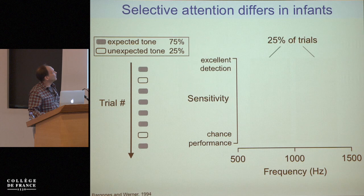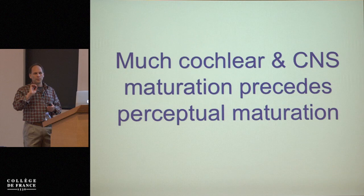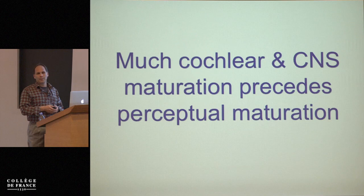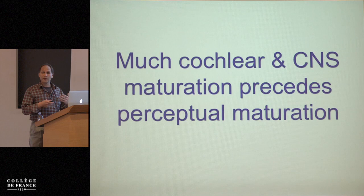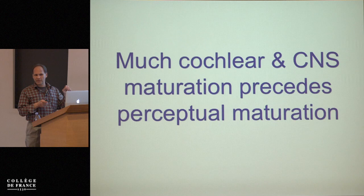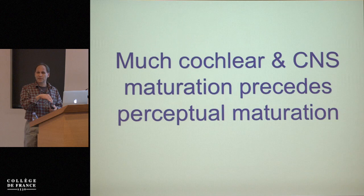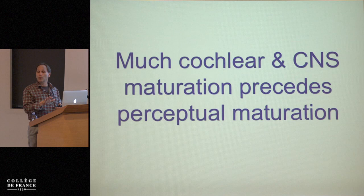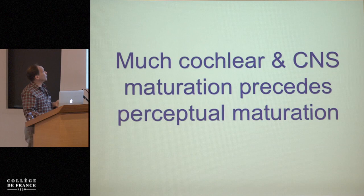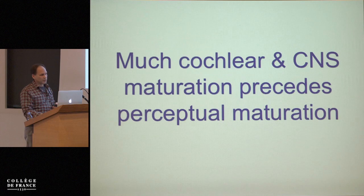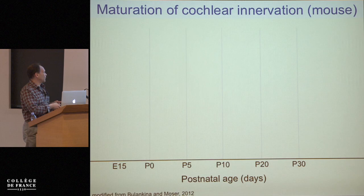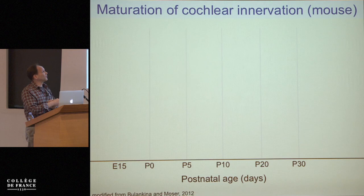Moving on to the development of the central nervous system: we have only a modest ability to explain how perception matures from firing rates of individual neurons, but let's dig deeper into connections, synapses, and function. Much cochlear — and probably all cochlear — and much CNS maturation occurs before perception reaches an adult-like state. I'll summarize cochlear development for a typical rodent, adapted from a review by Bullen-Keen and Moser.